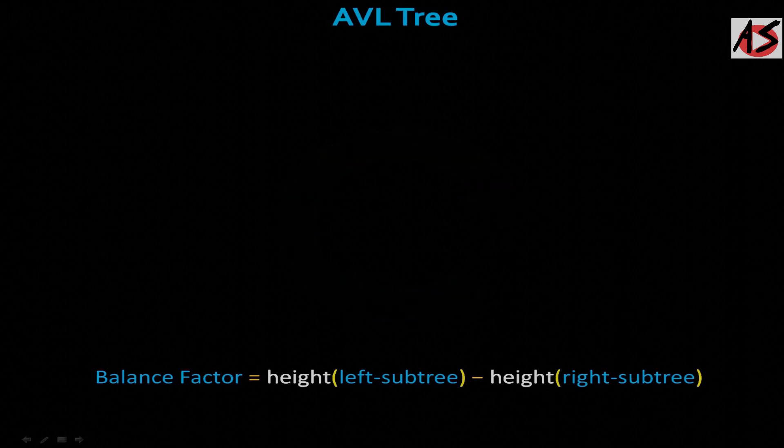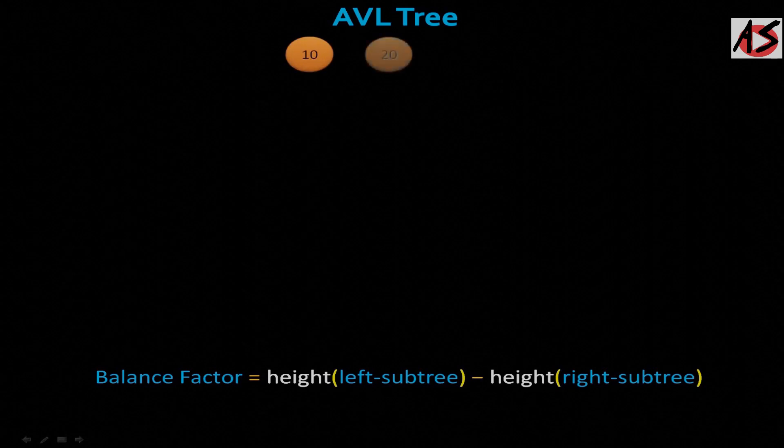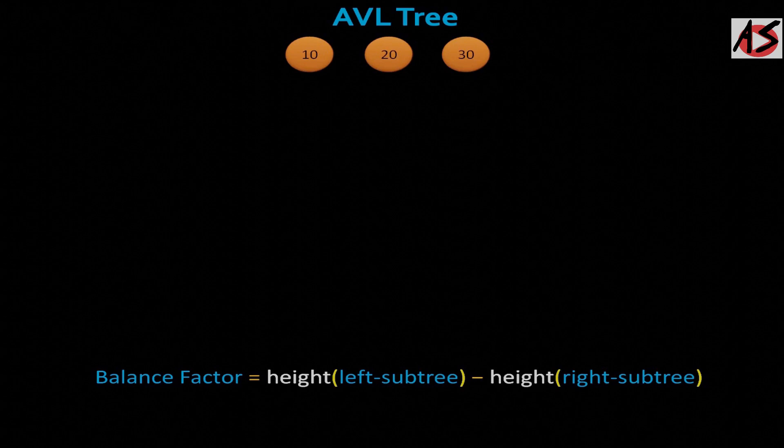So if you want to build AVL tree for 3 nodes like 10, 20 and 30, you will get 3 factorial is equal to 6 different input orders of these 3 elements.